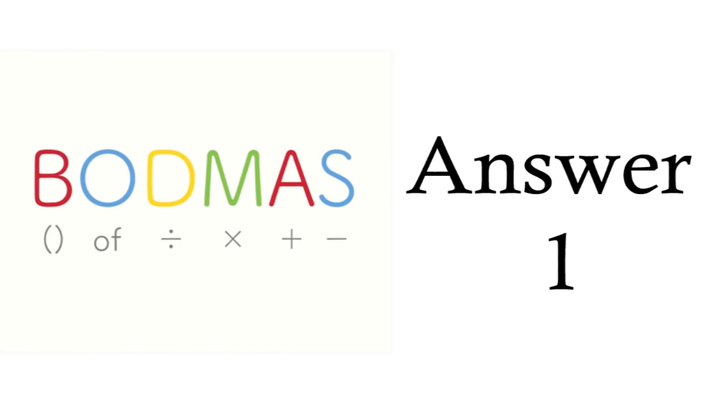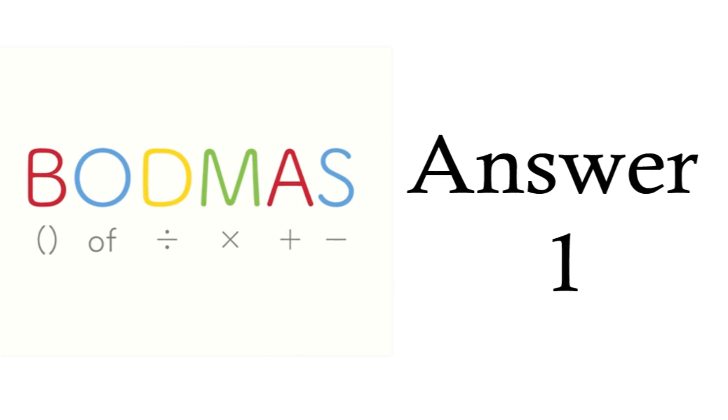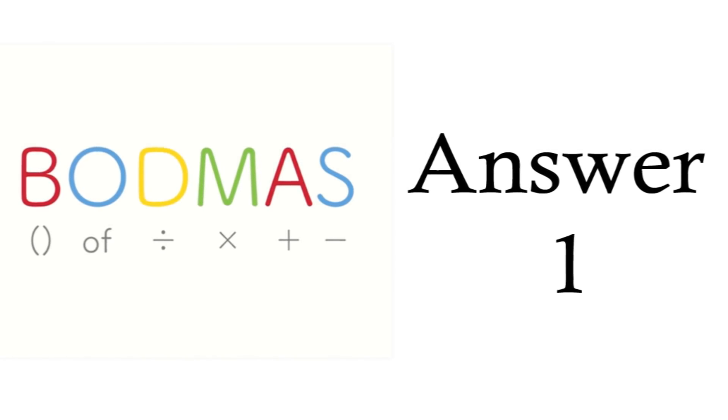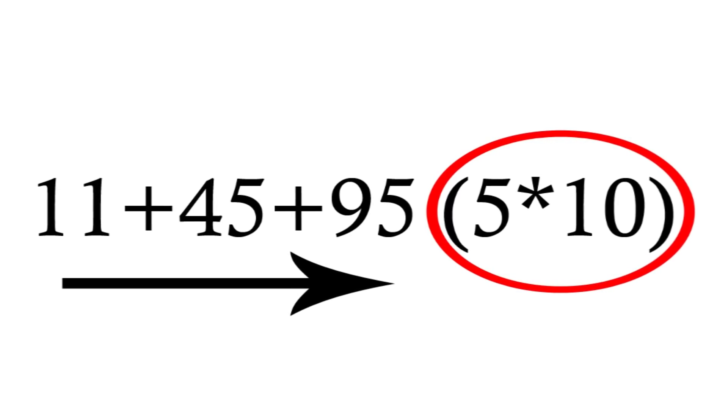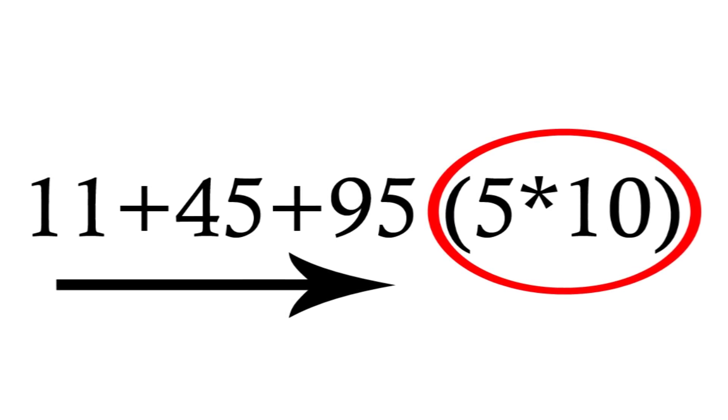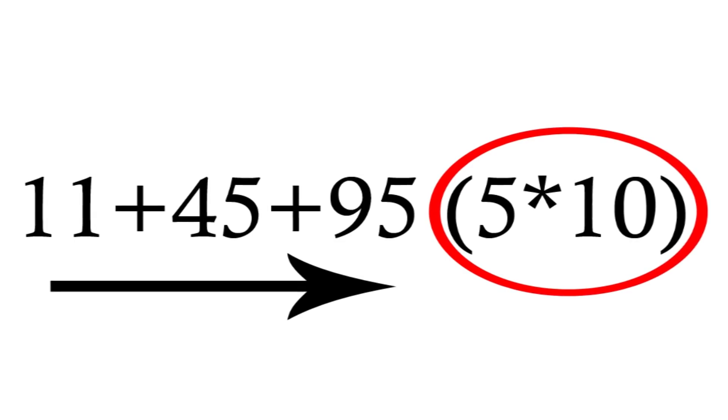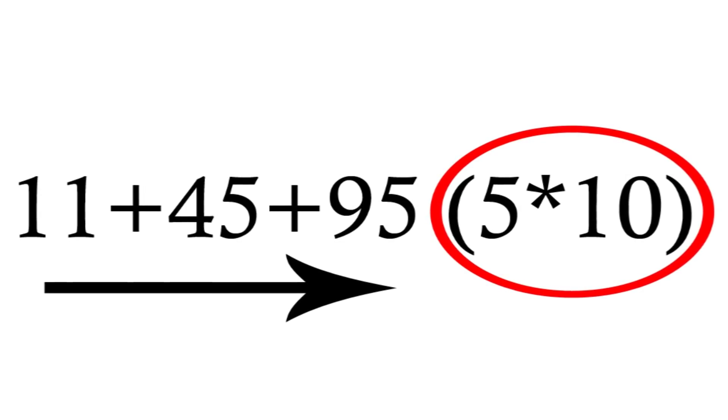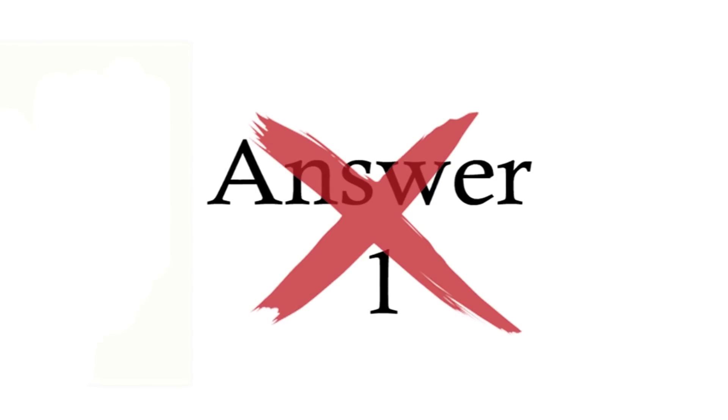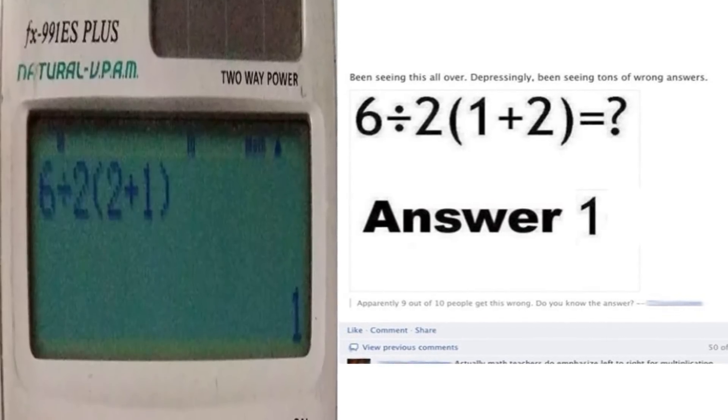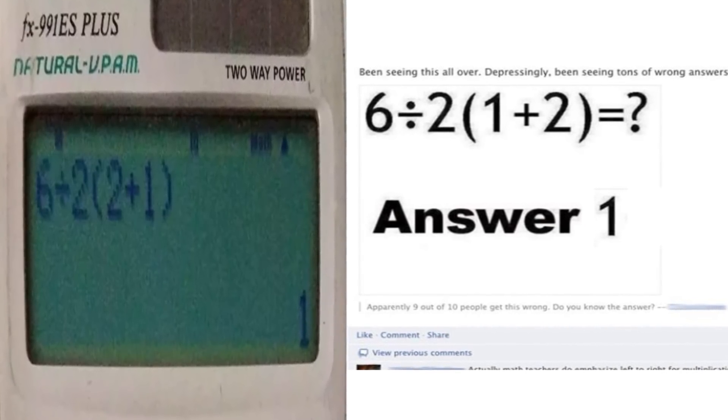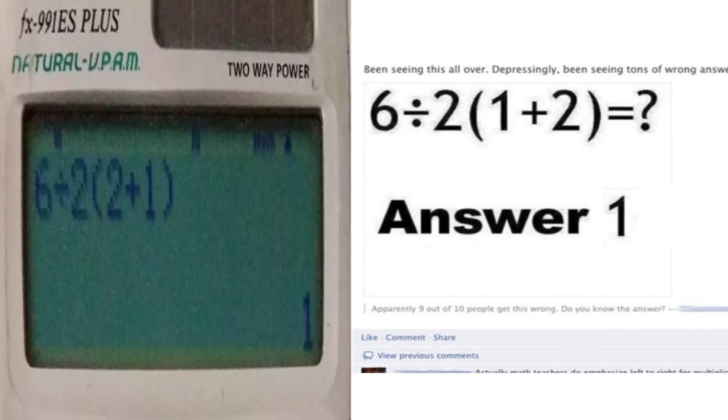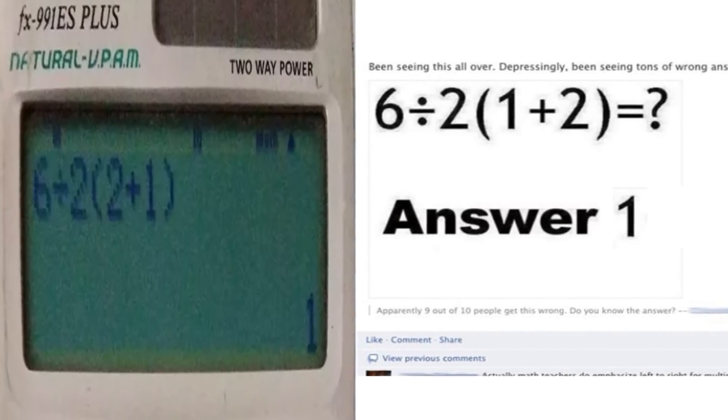If it weren't for the fact that the order of operations is in place, 1 would be the correct answer. However, according to the order of operations, you do the question in the brackets first and then, if the precedences are the same, you go from left to right. This would make the method that you used to get the answer 1 wrong. Since the order of operations is at play here, the answer can't possibly be 1. Although certain calculators and search engines come up with the answer 1, which is still not correct.